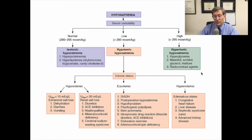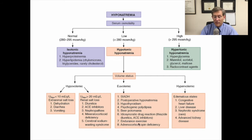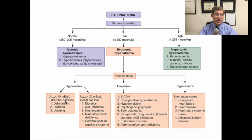Patients who have hypervolemic hyponatremia usually have edematous states. In general, there's a problem with delivering water to the kidneys and having it excreted properly. Examples include congestive heart failure, cirrhosis, advanced kidney disease, and nephrotic syndrome. One important point is that the initial treatment for both euvolemic and hypervolemic hyponatremia is fluid restriction — water restriction. This can be complex in the critically ill patient who may be hypotensive, which is why it's important to determine if they're truly hypovolemic, because the treatment there is to correct volume status first.